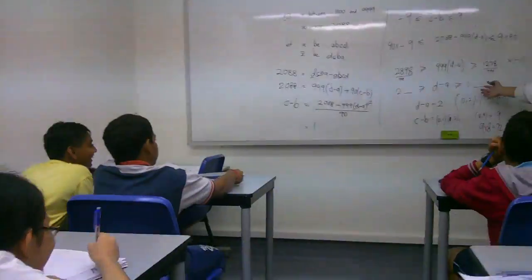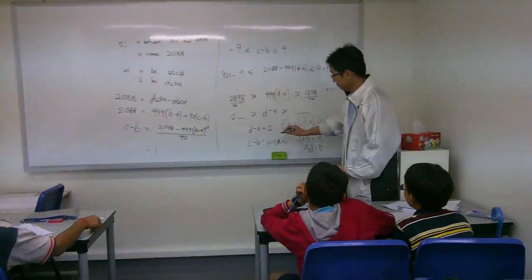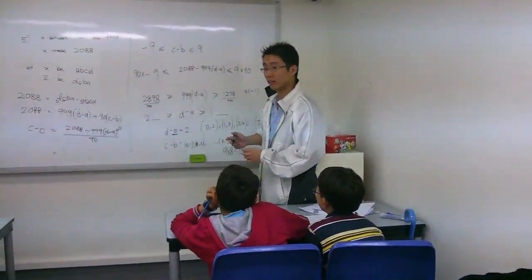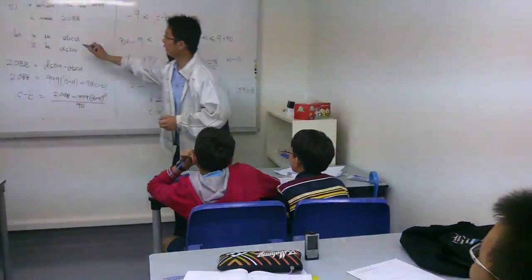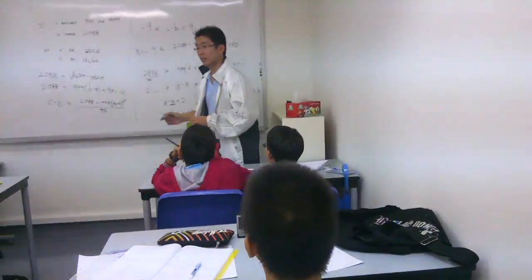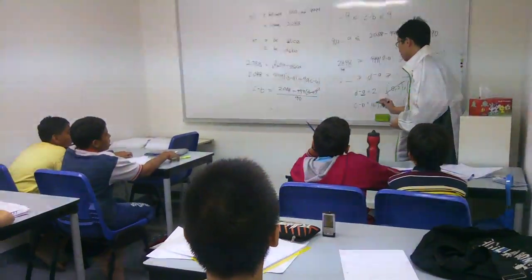This is very important. What is your A? A is your first digit. So A cannot be 0, this one cancels.